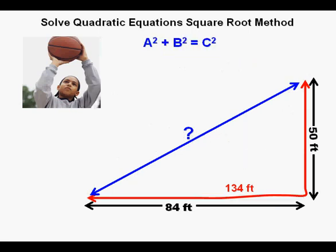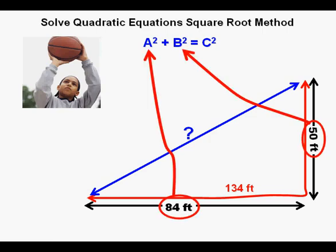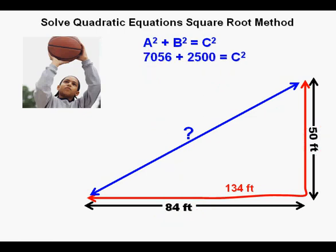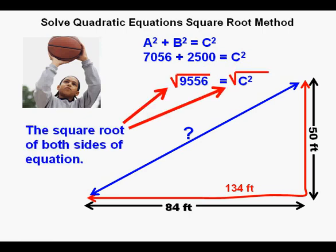But he knows that by solving a quadratic equation, he can get a very exact number. He remembers the Pythagorean theorem, a squared plus b squared equals c squared. He puts in 84 for a and 50 for b. He squares the numbers and gets 7056 plus 2500 equals c squared. And combining like terms, he gets 9556 equals c squared. He solves by taking the square root of each side of the equation.